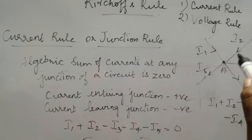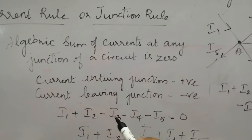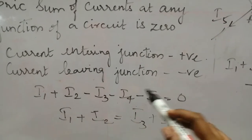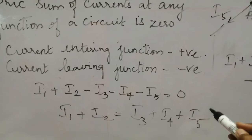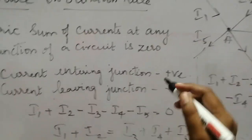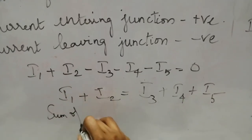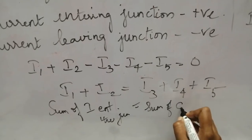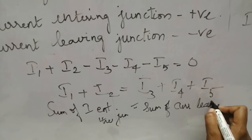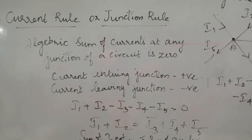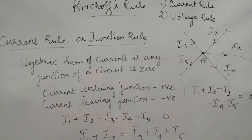You can also rewrite this equation by bringing the minus values to the other side: I1 + I2 = I3 + I4 + I5. This means I1 and I2 are currents entering the junction, and I3, I4, I5 are all currents leaving the junction point. So the sum of currents entering the junction point equals the sum of currents leaving the junction point. This is Kirchhoff's current rule, also called the junction rule. Kirchhoff's voltage rule will be discussed in the next video.